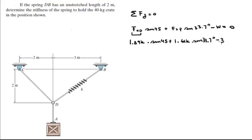Minus the weight, which is 392.4, equals 0. We have one equation, one variable, which is K. So all you have to do is multiply everything and solve for K.